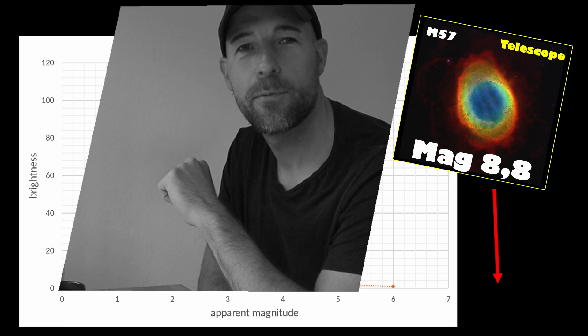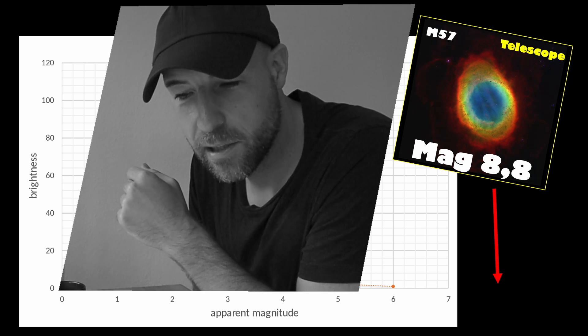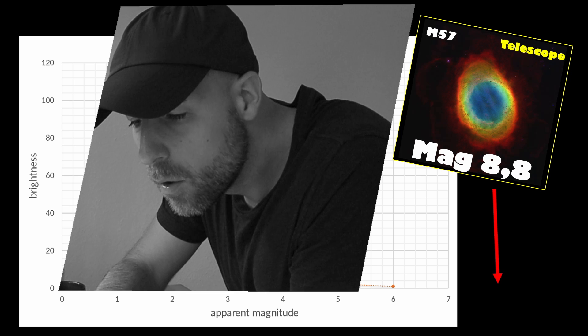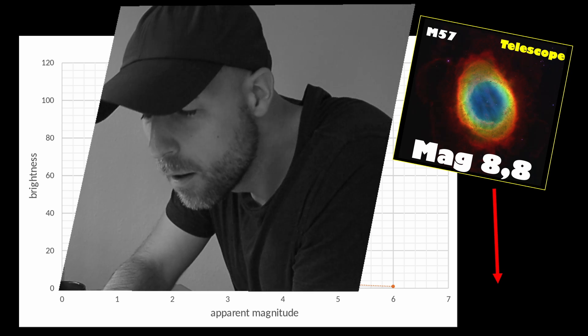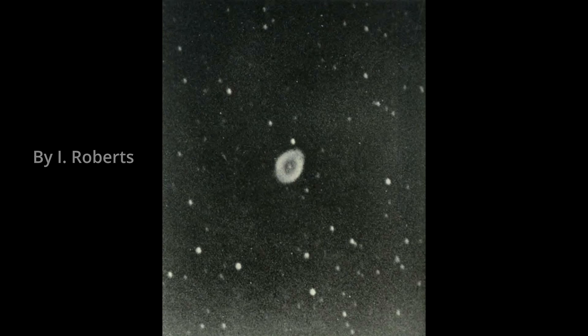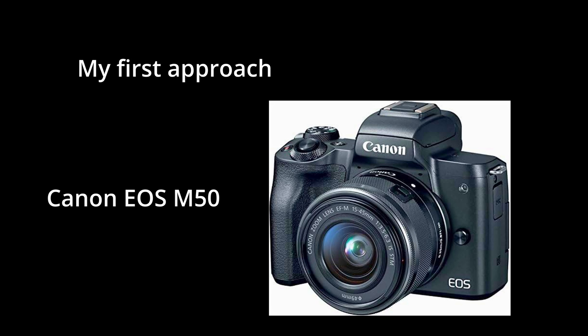I think I will try to capture this crazy Ring Nebula with my DSLR. Here are some older images of M57 — for example from Isaac Roberts — or this drawing from 1874.